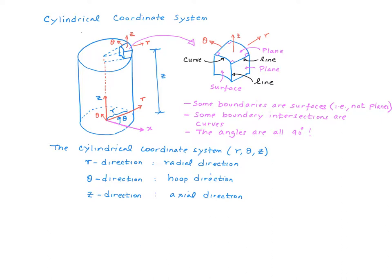The origin of the coordinate system is placed at the center of a circle. Every point on or within the cylindrical object is represented in terms of three coordinates: r, theta, and z.